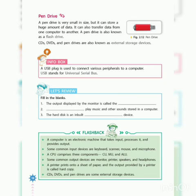The next commonly used storage device is the pen drive. A pen drive is very small in size but it can store a huge amount of data. It can also transfer data from one computer to another. A pen drive is also known as a flash drive.